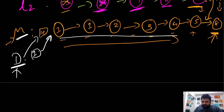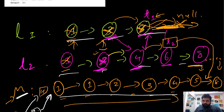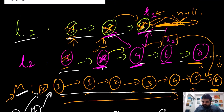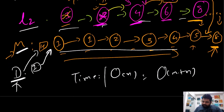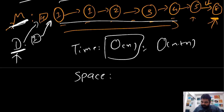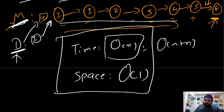The time complexity is O(m + n), where m is the total number of nodes in list one and n is in list two, since we iterate over all nodes in both lists. For space complexity, we only use a couple of extra parameters, and the merge list itself is not counted as additional space, so the space complexity is O(1). This is the most optimal solution.